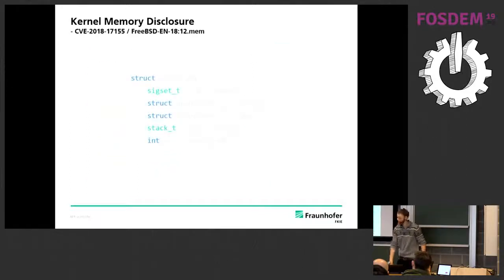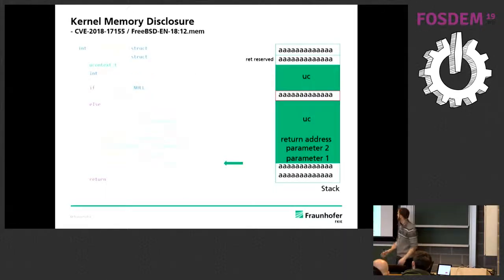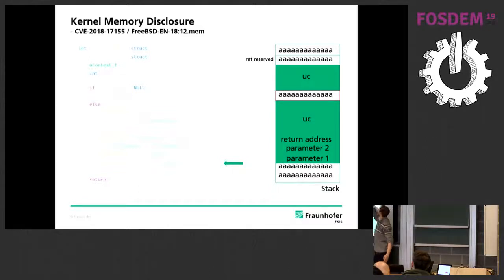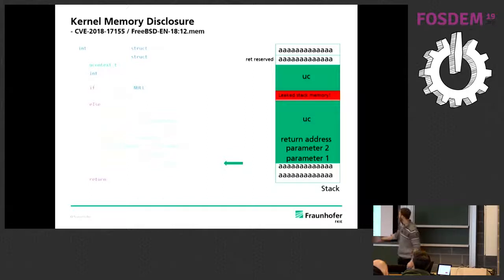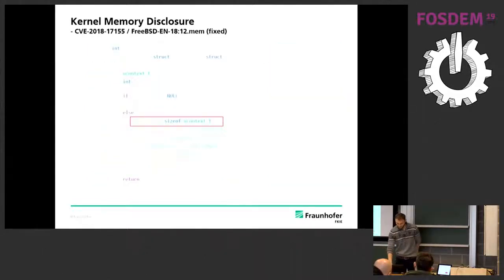How does this struct actually look? It's a struct nested with structs — on another layer also nested. It's kind of complicated. Nobody really knows how this will be laid out in memory by the compiler because of padding and stuff like that. As a consequence, the function get_mcontext fills this memory area, and there's a hole — some padding gap. Now we're copying the whole struct to user space, and this hole is leaked stack memory. Everything that was there before is now in user space.